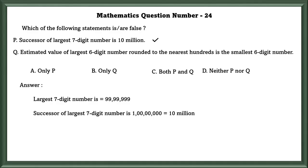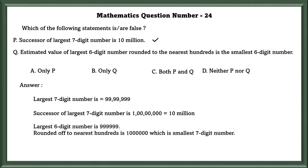Statement Q: the estimate value of the largest 6-digit number rounded to the nearest hundredth is the smallest 6-digit number. The largest 6-digit number is 9,99,999. Rounding off to the nearest hundredth gives 10 million, which is the smallest 7-digit number. So, this statement is wrong because they have given 'smallest 6-digit number.'